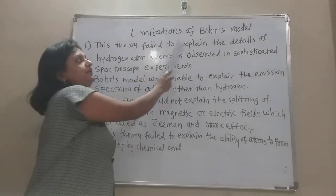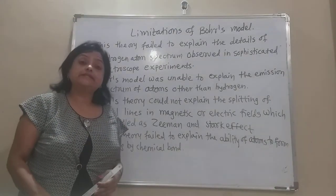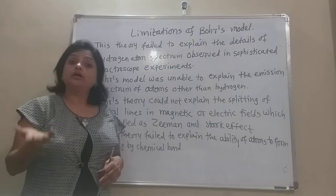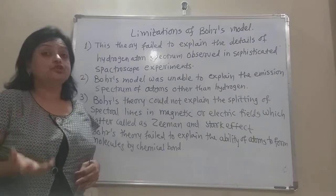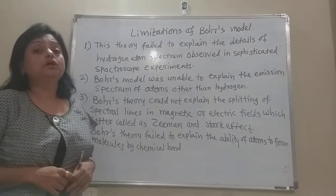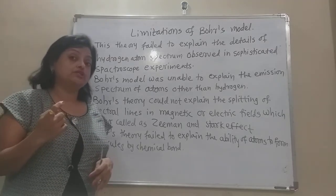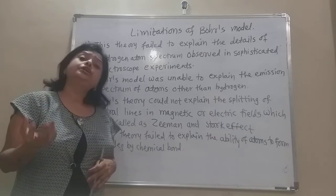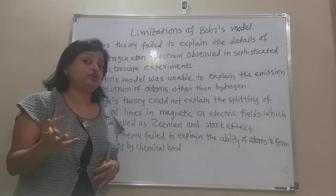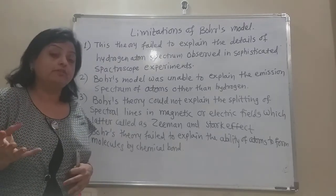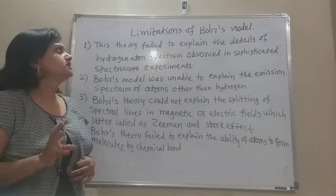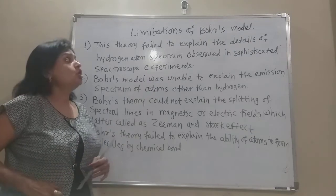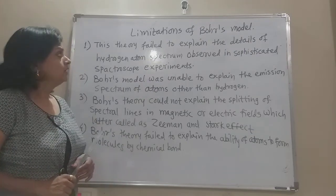Now we come to the limitations of Bohr's model. Though Bohr gave expressions for energy levels, energy differences, and radii of orbits, and explained the emission spectrum of the hydrogen atom very clearly, his model still has some limitations, which are essentially drawbacks or errors.